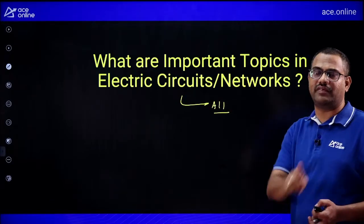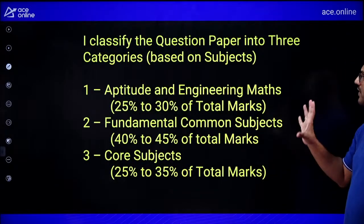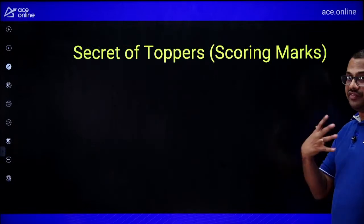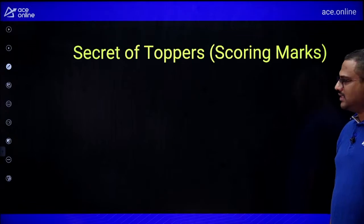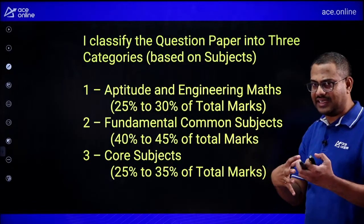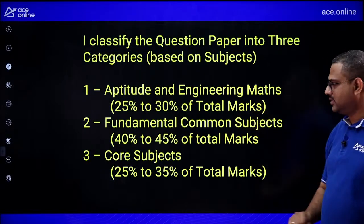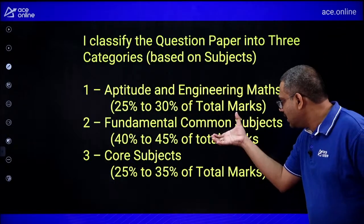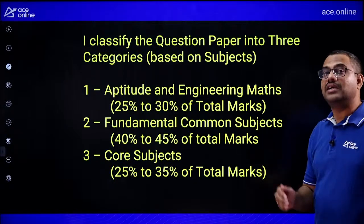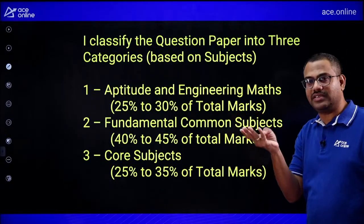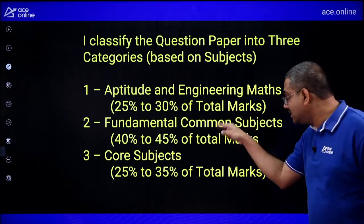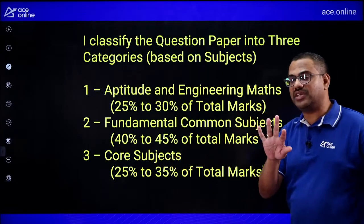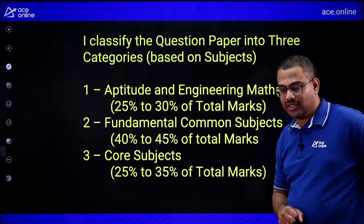I classify the question paper into three categories — this is the secret of toppers, based on direct feedback from students who cracked these exams. Category 1: Aptitude, Engineering Math, and English — 25 to 30% of total marks. Category 2: Fundamental common subjects (Networks, Controls, Analog, Digital, Microprocessors — common for EE, ECE, Instrumentation) — 40 to 45% of marks. Category 3: Core branch-specific subjects — Power Systems, Power Electronics, Machines for EE; VLSI, Communication, EMTL for ECE.